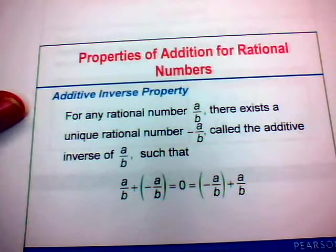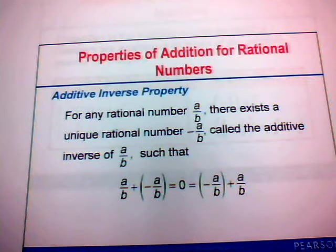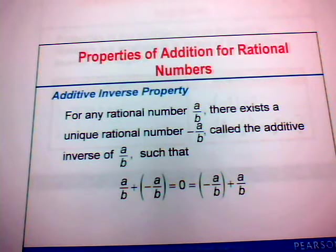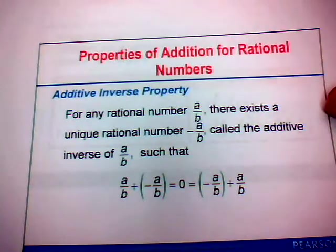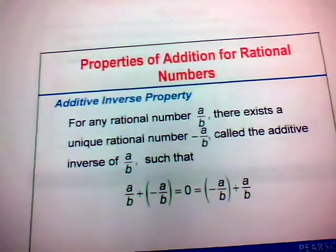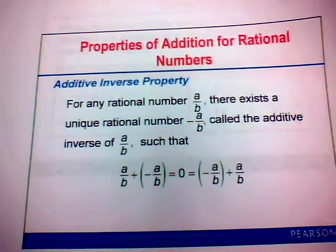Next are the properties of addition for rational numbers. The additive inverse property states that for any rational number a over b, there exists a unique rational number negative a over b called the additive inverse of a over b, such that a over b plus its additive inverse — negative a over b — gives you zero. Any rational number plus its additive inverse will give a sum of zero.